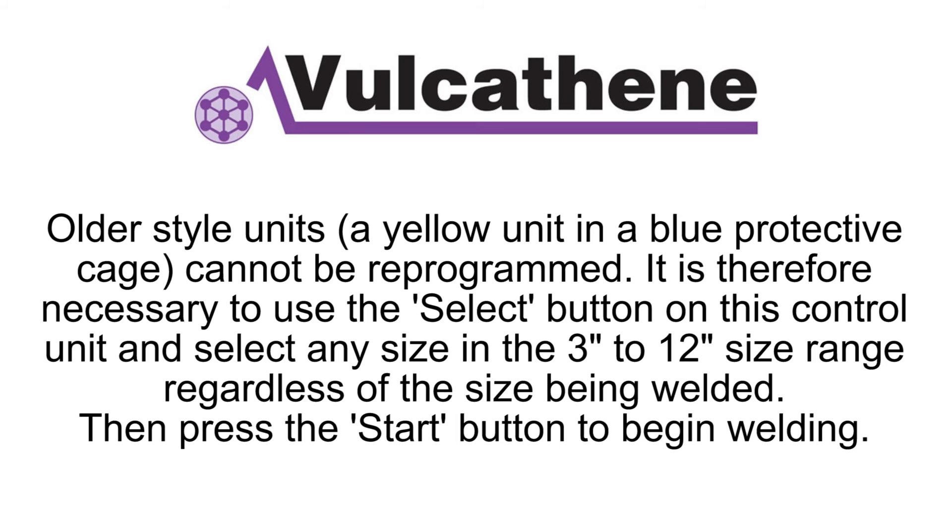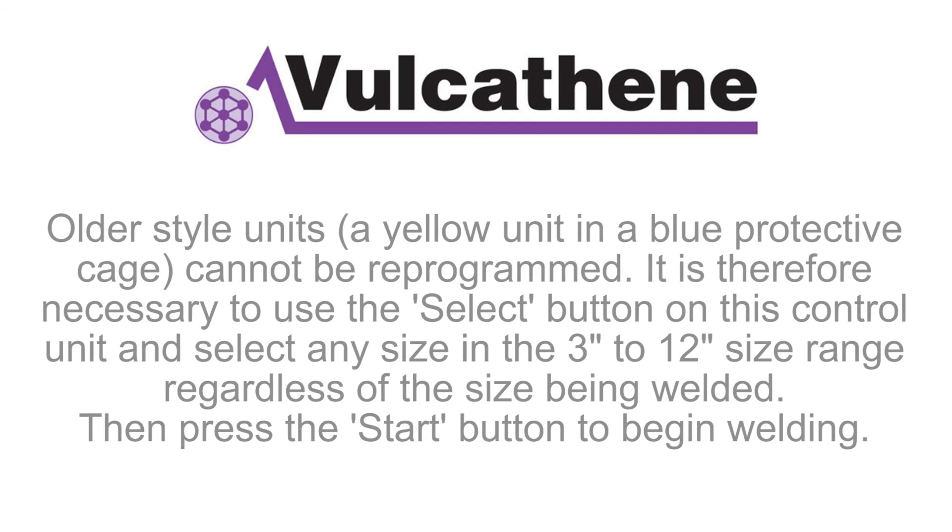Older style units (a yellow unit in a blue protective cage) cannot be reprogrammed. It's therefore necessary to use the select button on this control unit and select any size in the 3 inch to 12 inch size range regardless of the size being welded, then press the start button to begin welding.